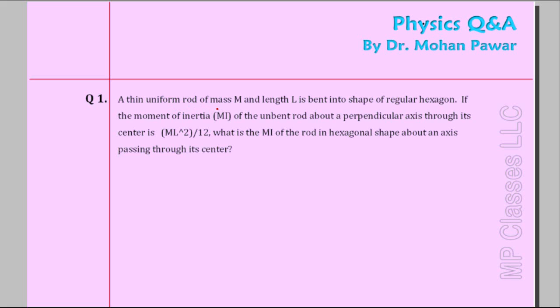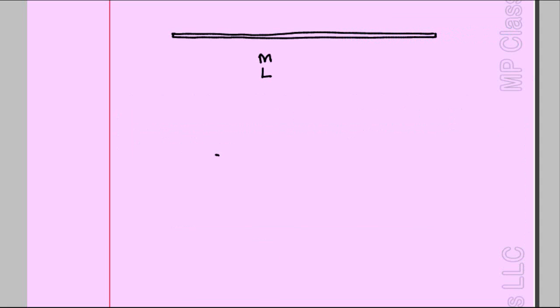A thin uniform rod of mass M and length L is bent into shape of a regular hexagon. You can pause and read this problem. I am going to explain what is given by drawing the diagram. So this is what is given. There is a rod which is thin, straight, has mass M length L. This rod is bent into shape of regular hexagon.